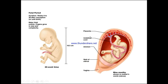The fetal period runs from weeks 9 to 38 after conception or until birth. Major fetal events involve organs growing in size and complexity. Here we can see 18.5 centimetres, which is the size of a 20-week fetus, and you can see very human-like characteristics at this point.